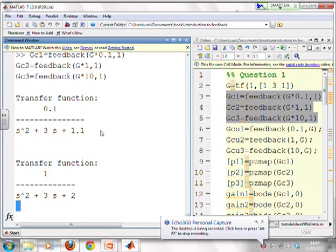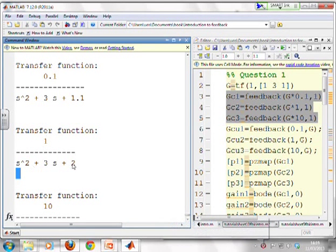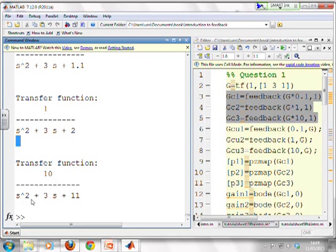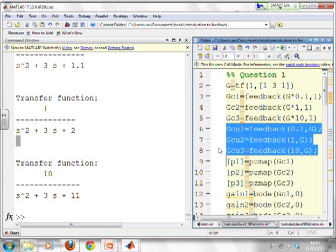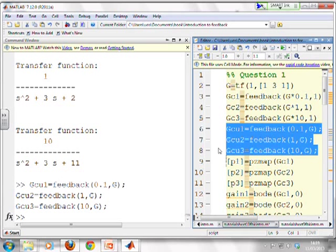So there they are, 0.1 over s squared plus 3s plus 1.1, 1 over s squared plus 3s plus 2, 10 over s squared plus 3s plus 11. We're also going to generate the ones for the inputs, we'll use those in a bit. So first, pole positions.